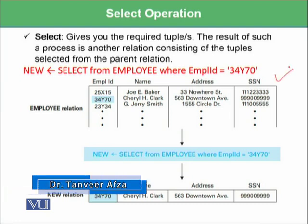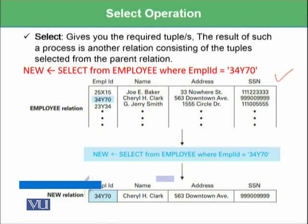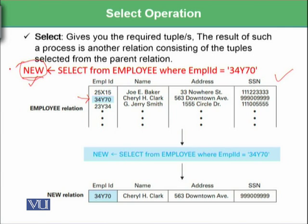For example, this is the parent relation and you want to select only the employee having employee ID 34570, which is available at the second tuple. In the syntax, you write a name for the new relation — you can write 'new', 'new one', or 'required employee', whatever you want. This means you are putting all selected tuples into this new relation.